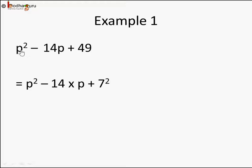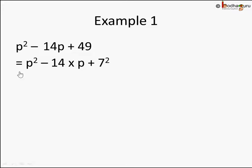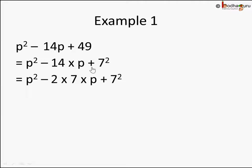The first step is to represent the terms as squares. We write p square minus 14 into p plus 49 as 7 square. So p corresponds to a and 7 corresponds to b. We get a square and b square. Now let's check if minus 2ab is in between. We had p square minus 14p plus 49, which we rewrite as p square minus 14 into p plus 7 square.